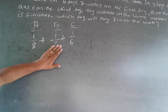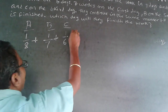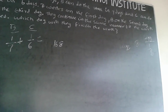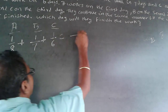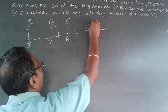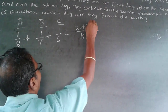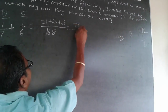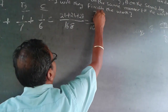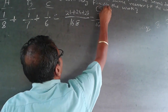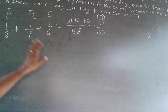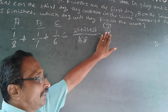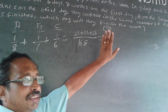The output in 3 days: the LCM is 168. It will be 21 plus 24 plus 28, which equals 73/168 in 3 days. So the work done in 3 days will be 73/168 of the work.